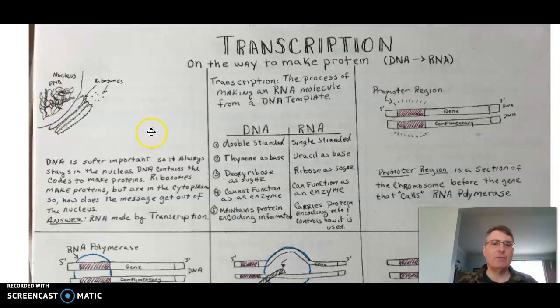The problem is the protein is made in the ribosomes, which are sitting out here in the cytoplasm or along the rough endoplasmic reticulum. Somehow we need to get the message from the nucleus out into the cytoplasm, to the ribosomes.